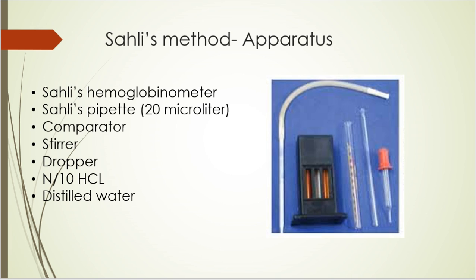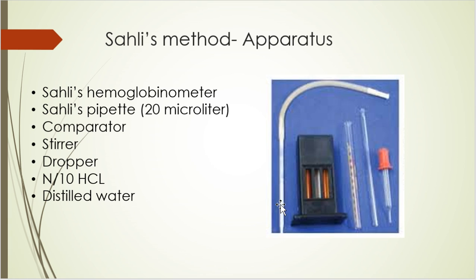Before looking at the procedure, let's see the apparatus. Sahli's kit - the apparatus part - is a hemoglobinometer box in which you get these things: one is the pipette - this is the hemoglobinometer pipette. This box is the comparator box. This is the hemoglobinometer tube and there is a glass stirrer and a dropper. Along with that, you'll get N/10 HCl and distilled water. These are the apparatus of Sahli's method. You can get spots of these apparatus, so some identification is needed. The most confusing are the hemoglobinometer tube and pipette, which you should know.